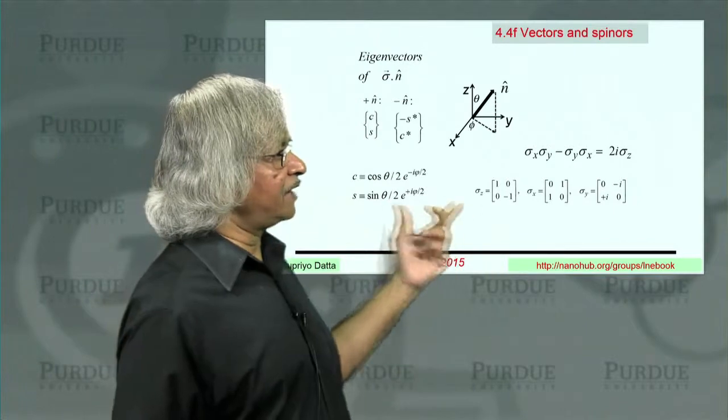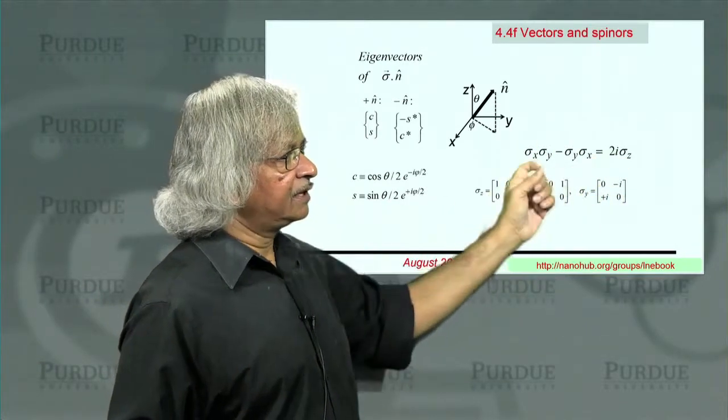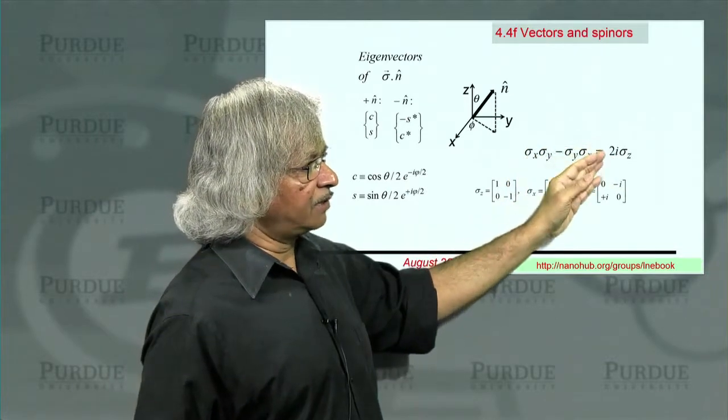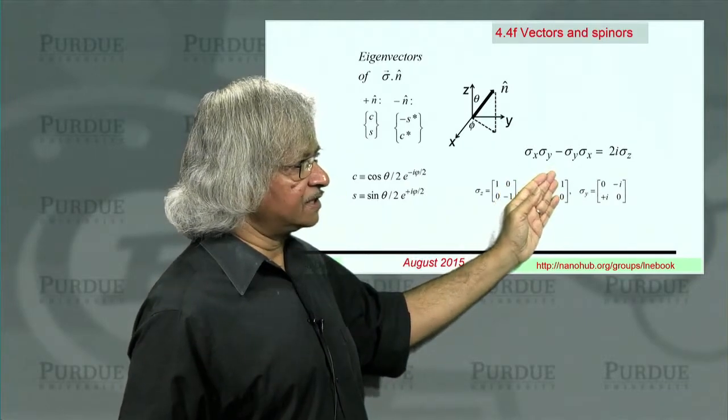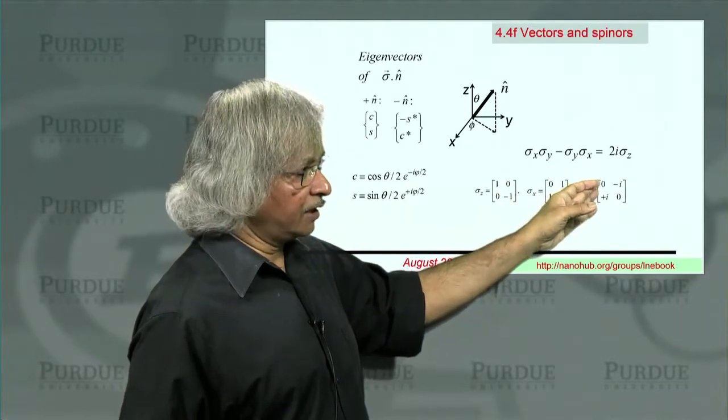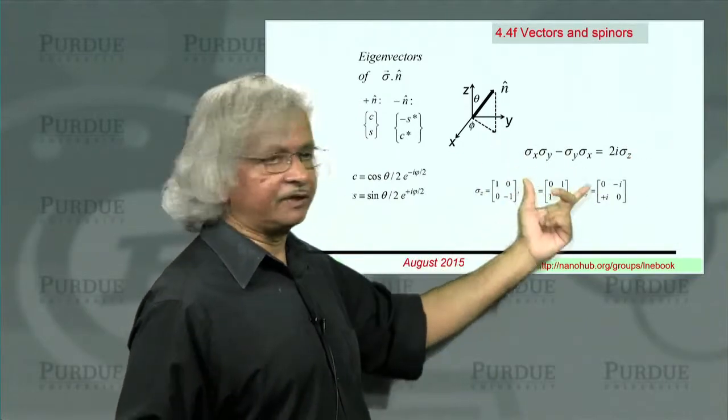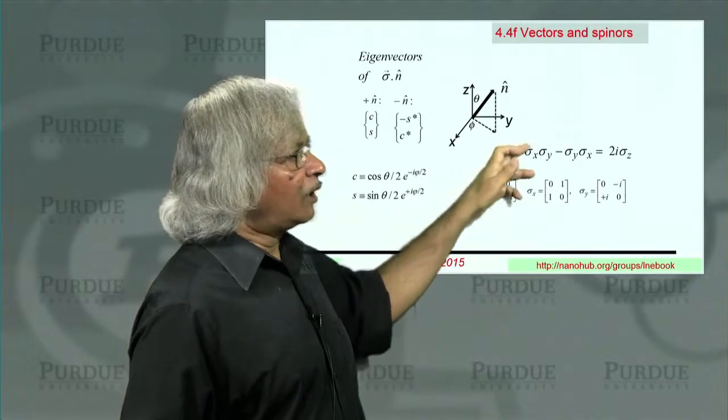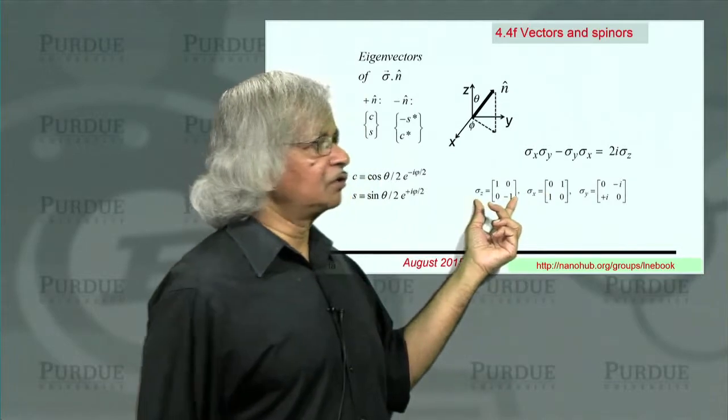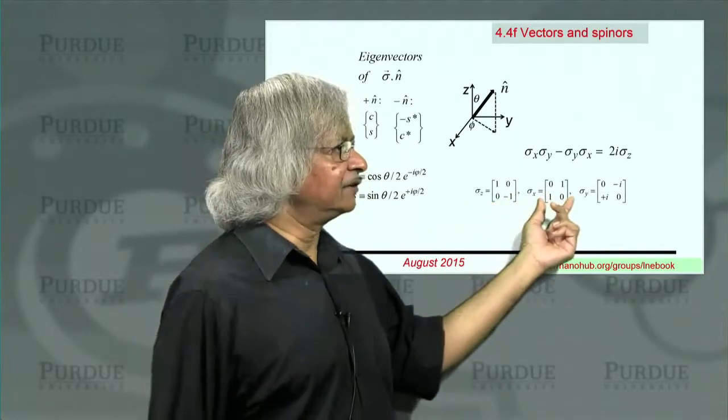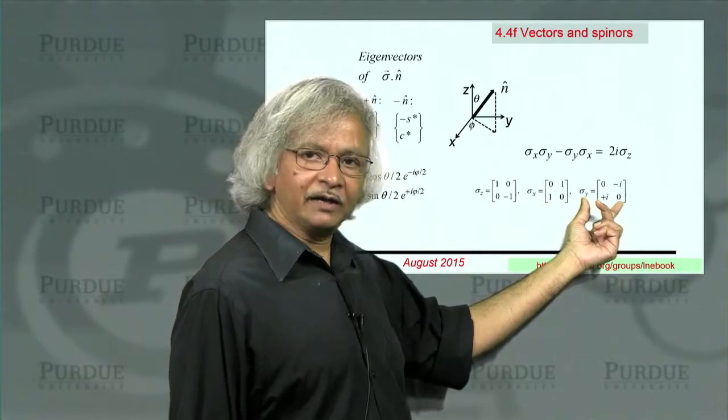And those are the properties that are obeyed by the Pauli spin matrices. So these Pauli spin matrices that I had written down earlier, they have this basic property, sigma x, sigma y minus sigma y, sigma x is 2i, sigma z. Similarly, sigma y, sigma z minus sigma z, sigma x, sigma y is 2i, sigma x, and so on. So cyclically, they have that property. And so, and once you have these matrices, then the way you interpret them is this matrix rotates you around the z-axis. This matrix rotates you around the x-axis. This matrix rotates you around the y-axis.